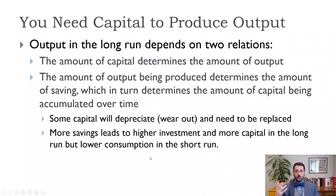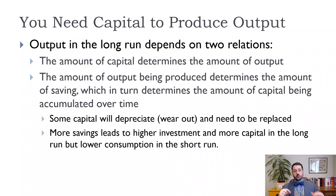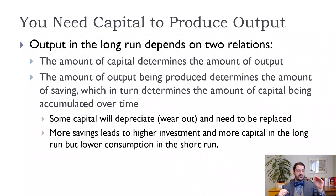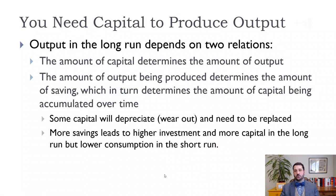The interesting point we're going to get to at the end of the chapter is that there's one level of capital per worker that maximizes consumption. Once you start saving more than that, consumption is actually going to go down. So we'll talk about that as well.